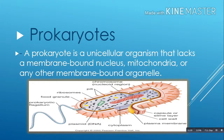Bacteria and archaea are single-celled, while most eukaryotes are multicellular. Fossils show that prokaryotes were already here on earth 3.5 billion years ago, and scientists think that prokaryotic ancestors gave rise to all of the life forms present on earth today.